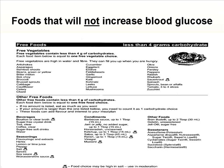Continuing the free vegetables list: cucumbers, eggplant, fiddleheads, garlic, kale, leeks, lettuce, mushrooms, onions, peppers, and tomatoes. Tomatoes are basically a free food unless you eat two cups or more of tomatoes.